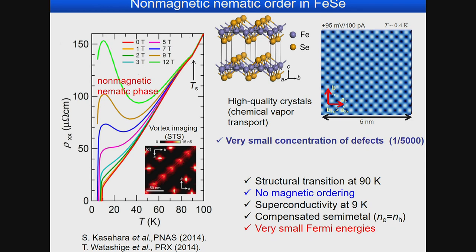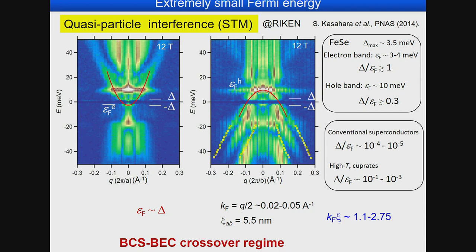The material has a compensated semi-metallic electronic structure, meaning equal numbers of electrons and holes. Most importantly, it has very small Fermi energies. We can obtain very beautiful single crystals using chemical vapor transport technique recently developed. STM topographic data shows very few defects and a very small concentration of defects, enabling quasi-particle interference measurements using STM.